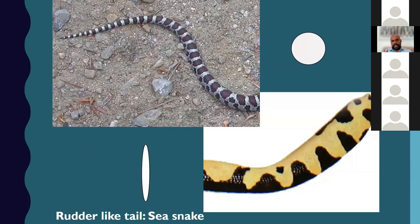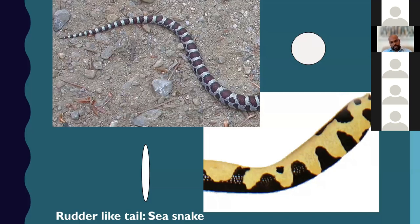The top image shows a cylindrical tail with a pointed end - if you take a cross section, it is rounded. The lower image shows the rudder-shaped sea snake tail. If you take a cross section it is a very elongated, slit-like shape, bilaterally flattened, which gives the snake force to swim around. All sea snakes have this unique tail. In this first step, we differentiate sea snakes from all other snakes.